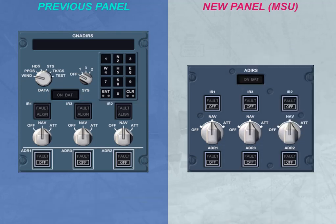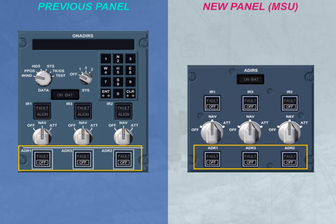The other noteworthy difference concerns the ADERS disconnections. As from the previous panel, the ADR outputs can also be disconnected from the MSU. But from the MSU, you have the additional capability to independently disconnect the individual IR outputs.